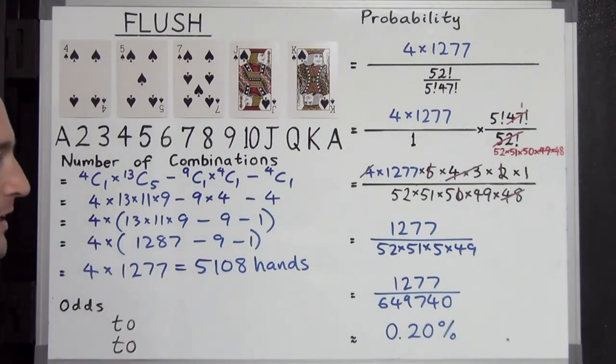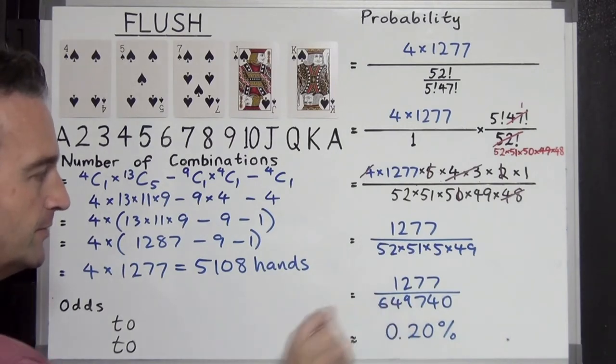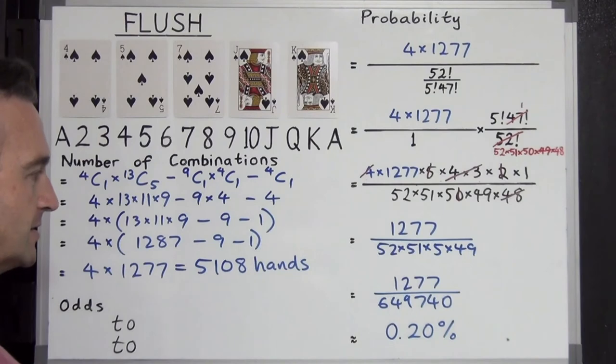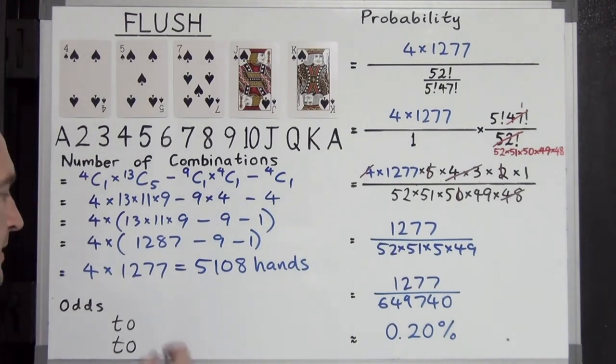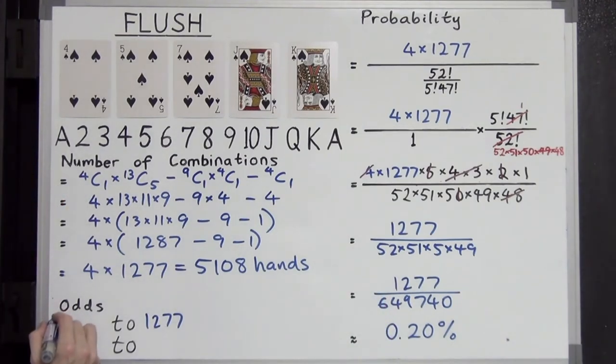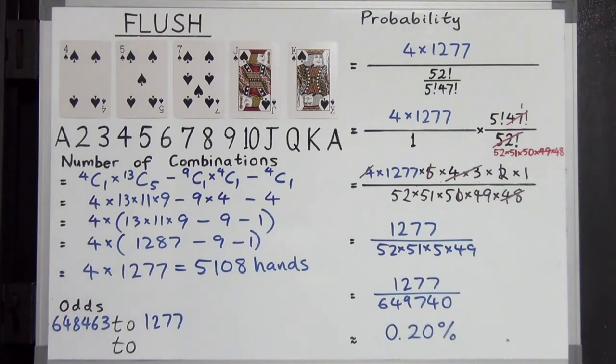We'll come over here now and look at the odds of getting a flush. So for every 649,740 hands, we can expect 1,277 to be a flush. And if you do the subtraction, you can expect 648,463 hands to not be a flush. Dividing both of these by 1,277, we end up with 507.8 to 1.